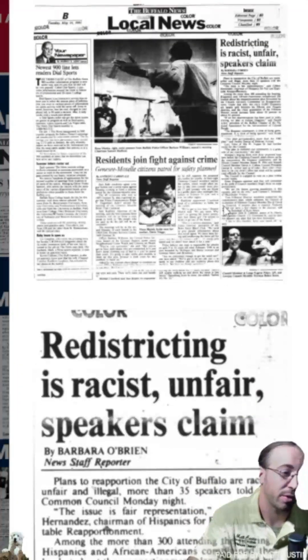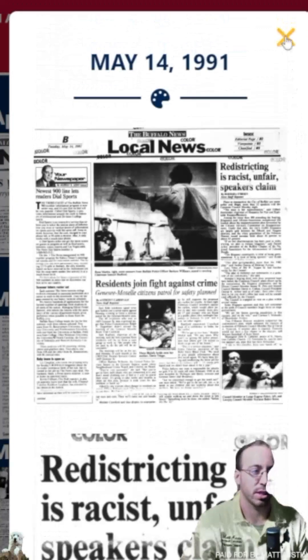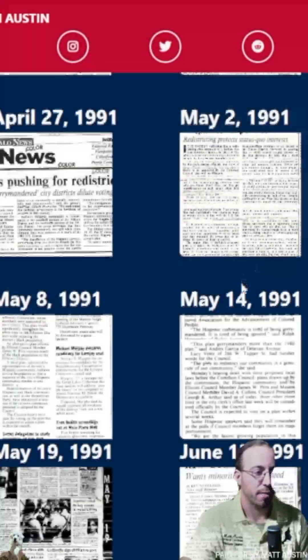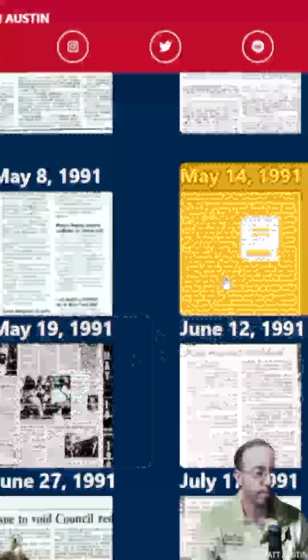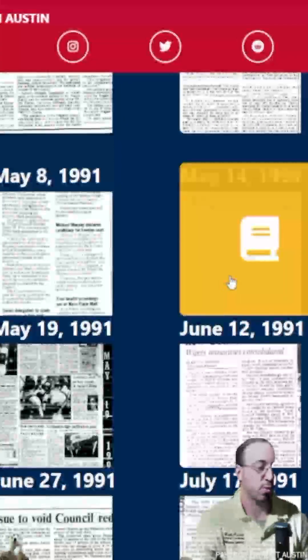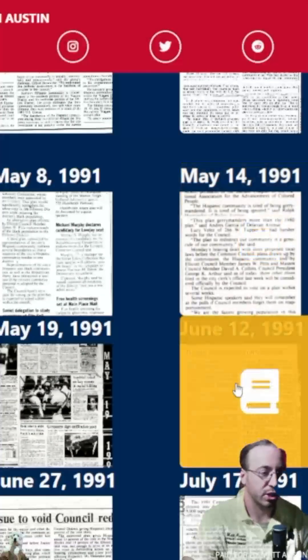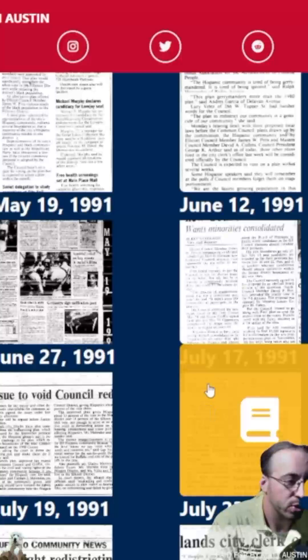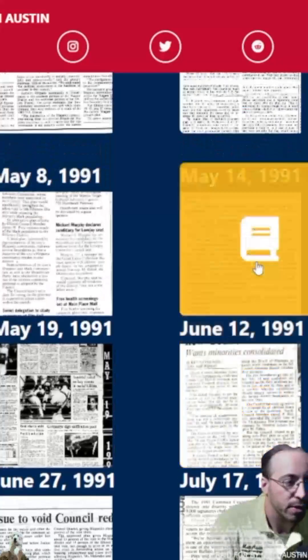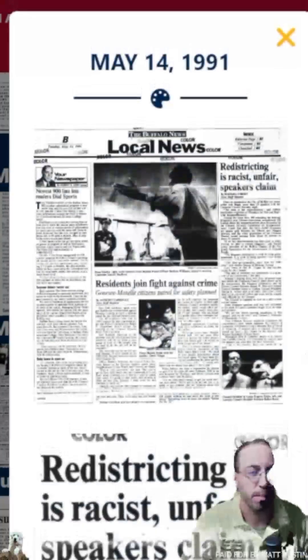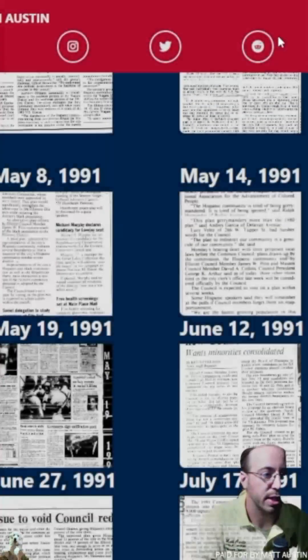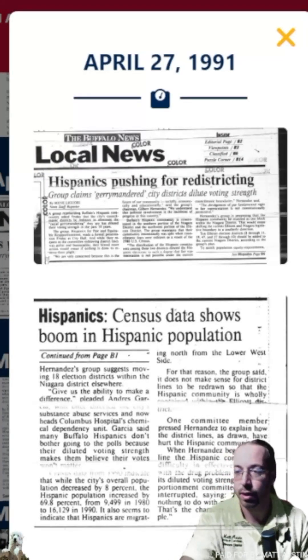The other thing was just how controversial this was — the city essentially got sued. There was a big fight. The major group was called 'Hispanics for Fair and Equitable Reapportionment,' which appeared in an April 27th article.